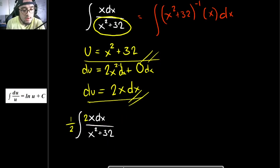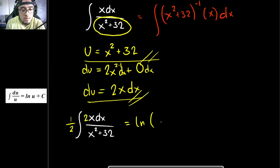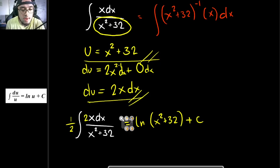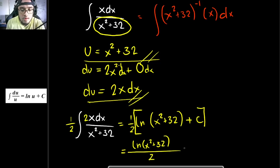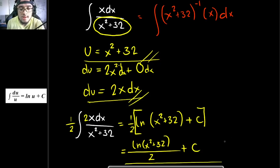Following the logarithm formula, the result is 1 half times the natural logarithm of u, and our u is x squared plus 32, plus c. Simplifying, this is equal to the natural logarithm of x squared plus 32, divided by 2, plus c, since a constant times 1 half is still a constant. This is your final answer for this particular problem.